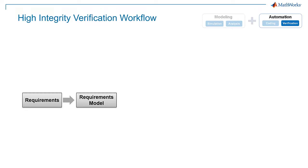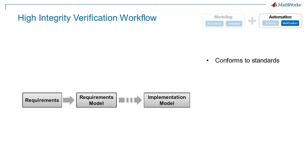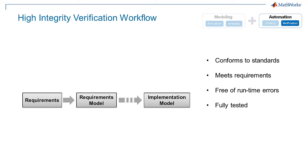After the requirements have been validated, you then create a model which can be used for production code generation — we call this the implementation model. At this stage you will verify that the model conforms to industry and internal standards, conforms to requirements, is free of runtime errors, and is fully tested.